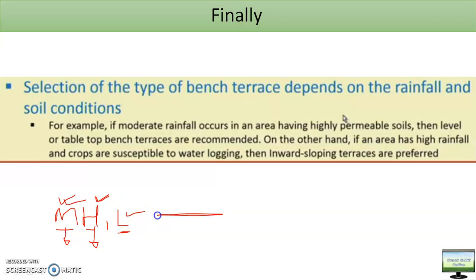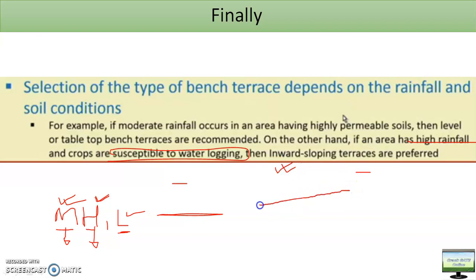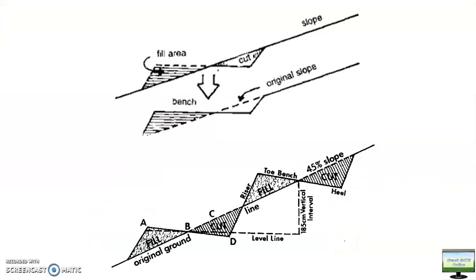If you come to know that rainfall is very high and crops are sensitive — water logging problem is there — then you need inward slope, because with inward slope you will remove all the water. Inverse sloping is useful for which type of crop? If you don't know, watch the previous video — that is for potato. So here I discussed this in video one also.